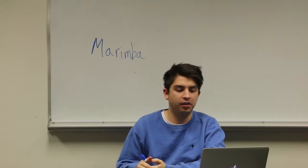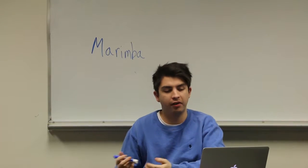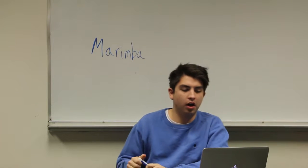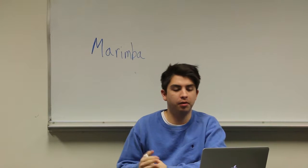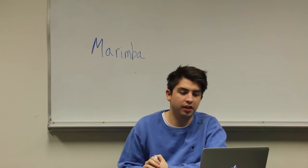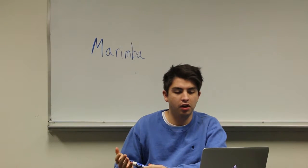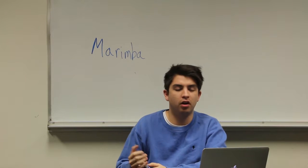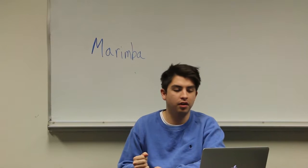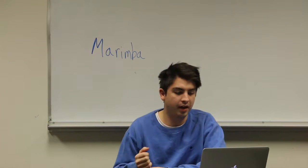I'm going to give you some basic facts about the marimba so you have background knowledge on the instrument. The instrument originated in Africa but became more popular in Central America. It consists of graduated wooden bars and often has resonators beneath to reinforce the sound. The instrument is struck by rubber mallets.